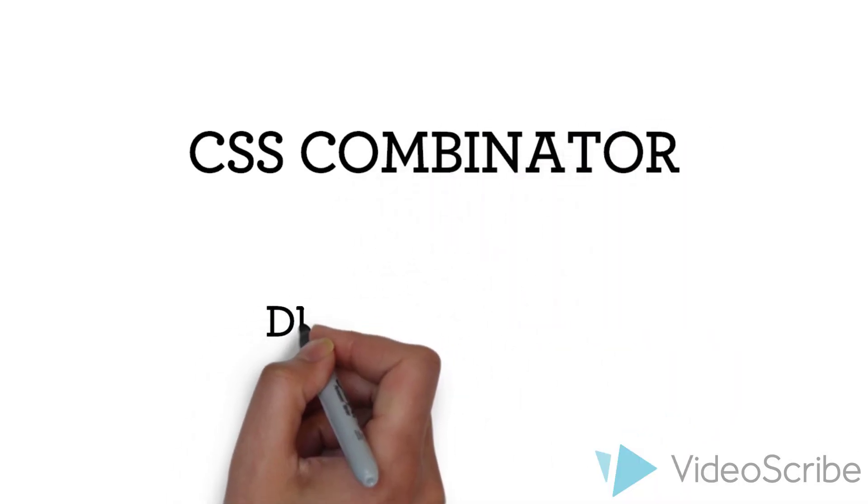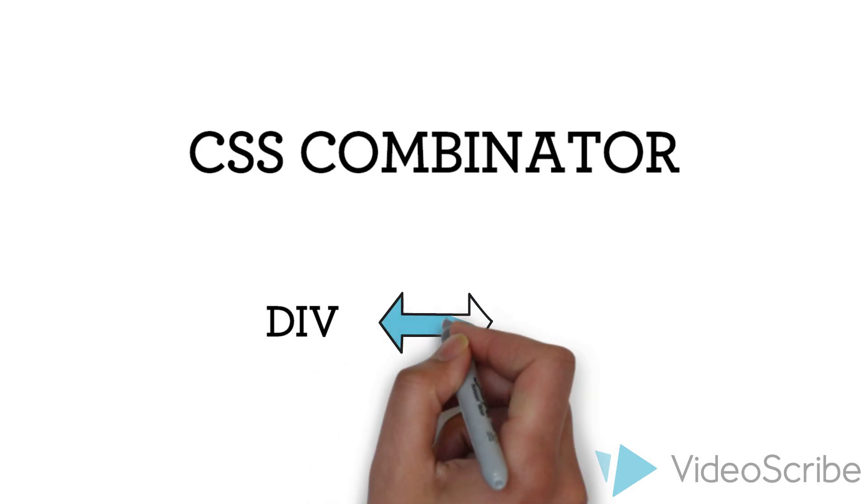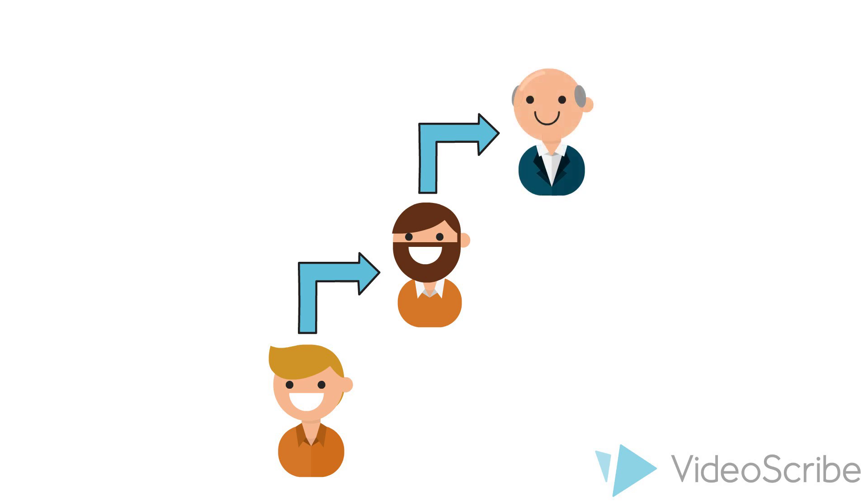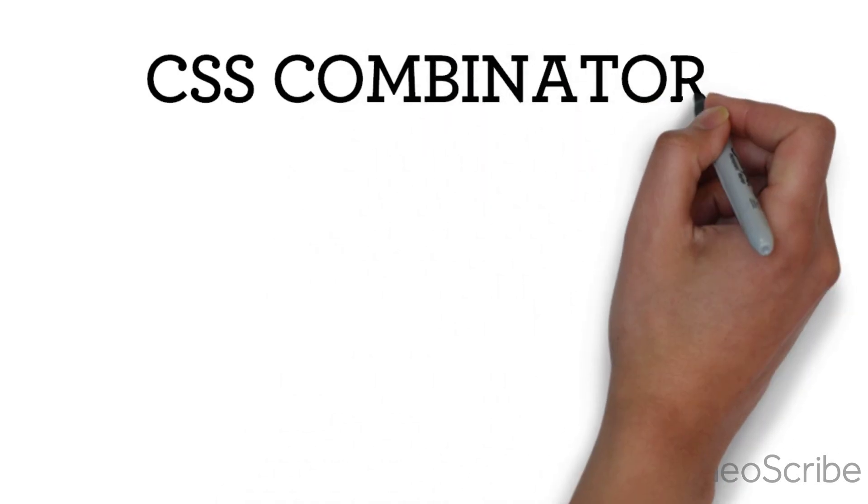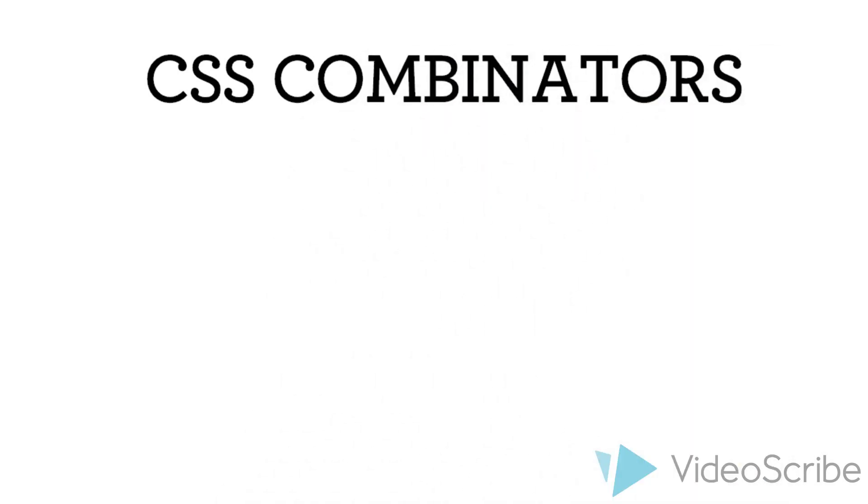A combinator is something that explains the relationship between CSS selectors. Like for example, you are the child of your parents and at the same time you are the grandchild of your grandparents. Easy, right? The same goes for combinators and we want to focus on four major combinators in this video.